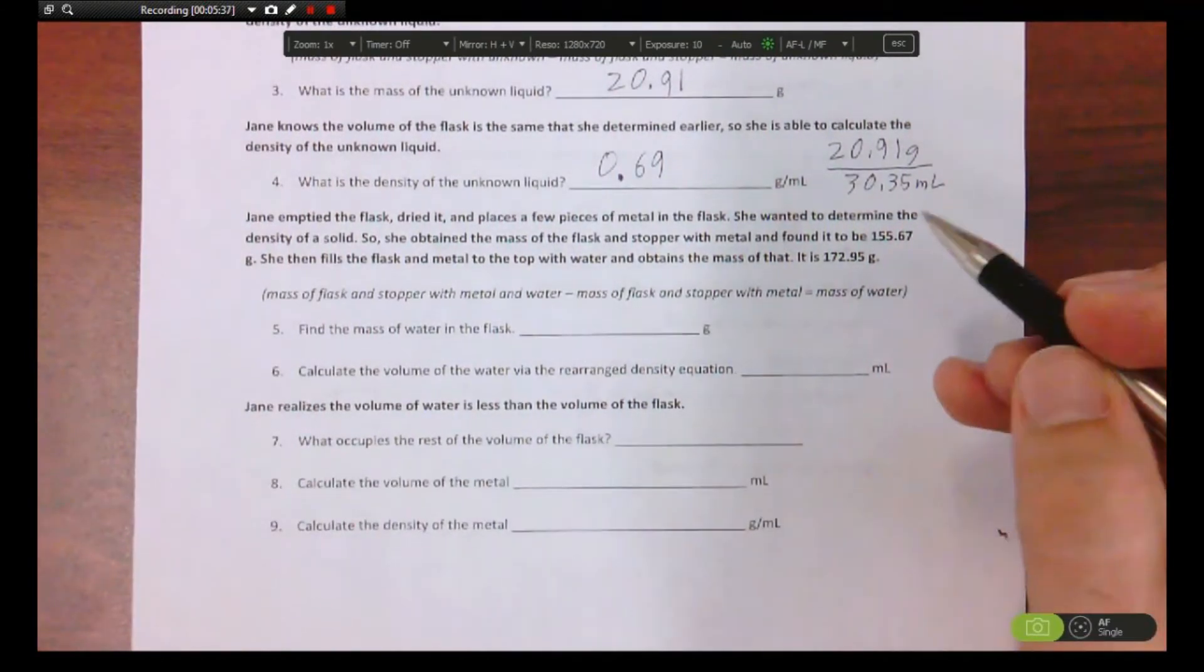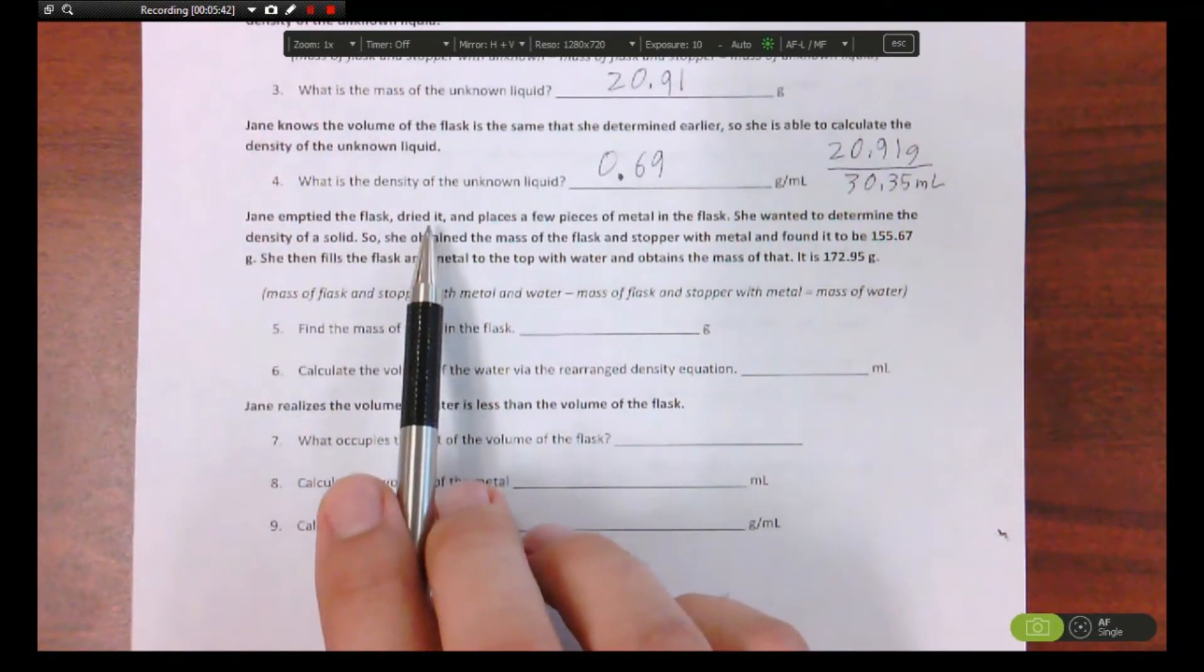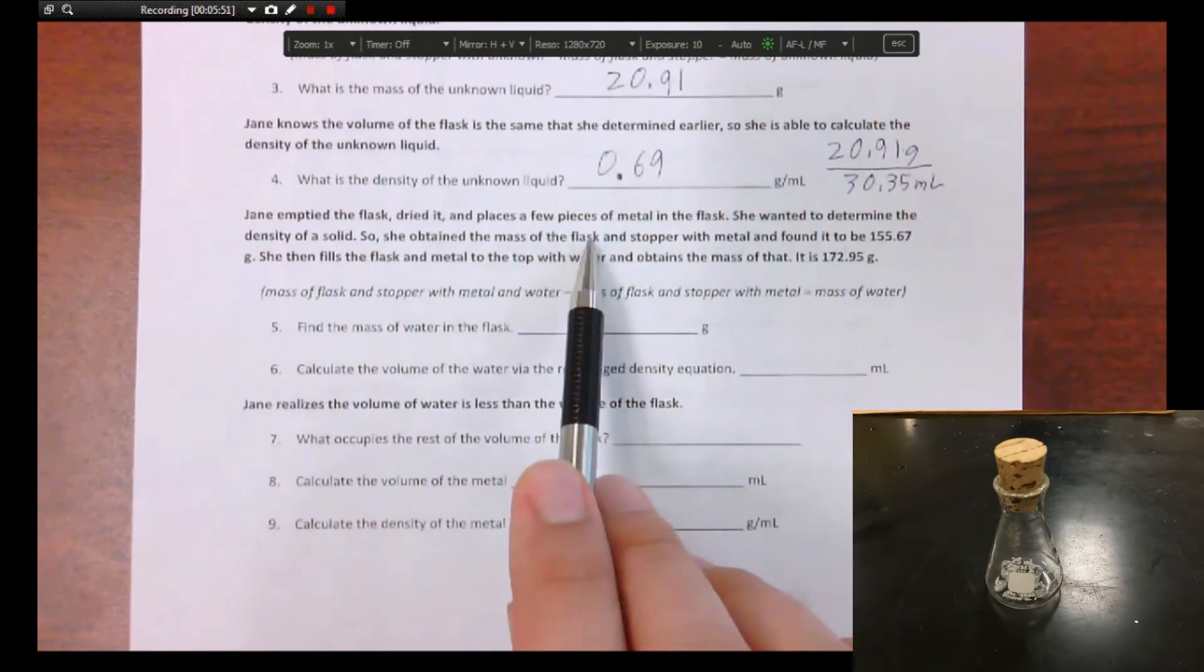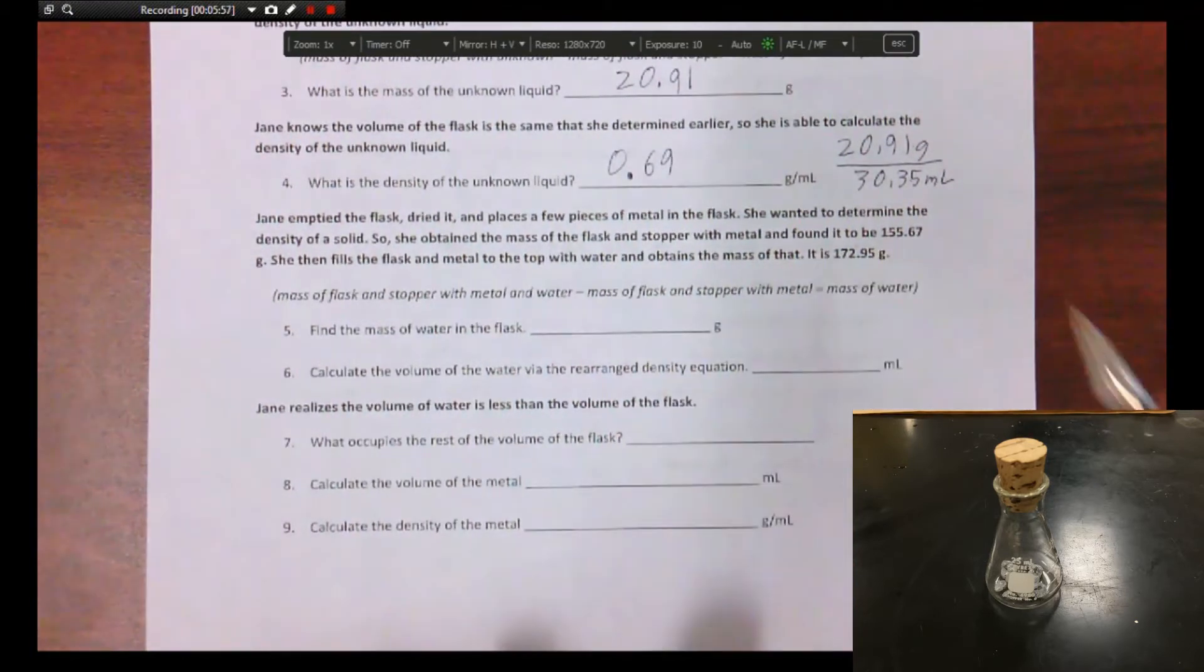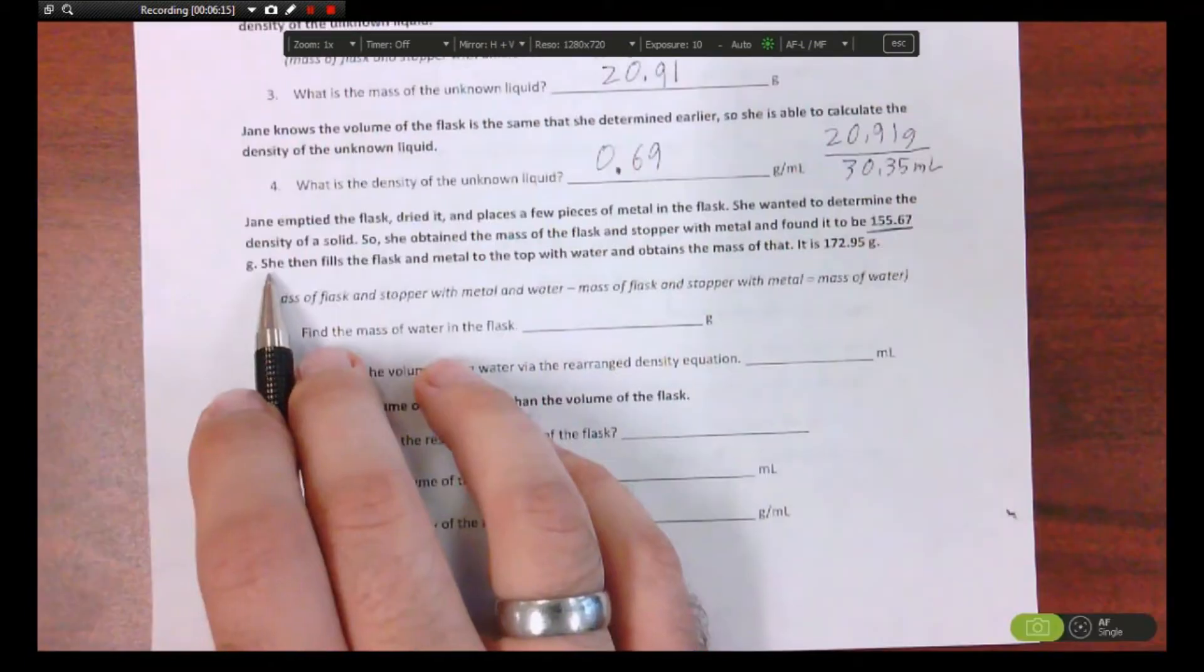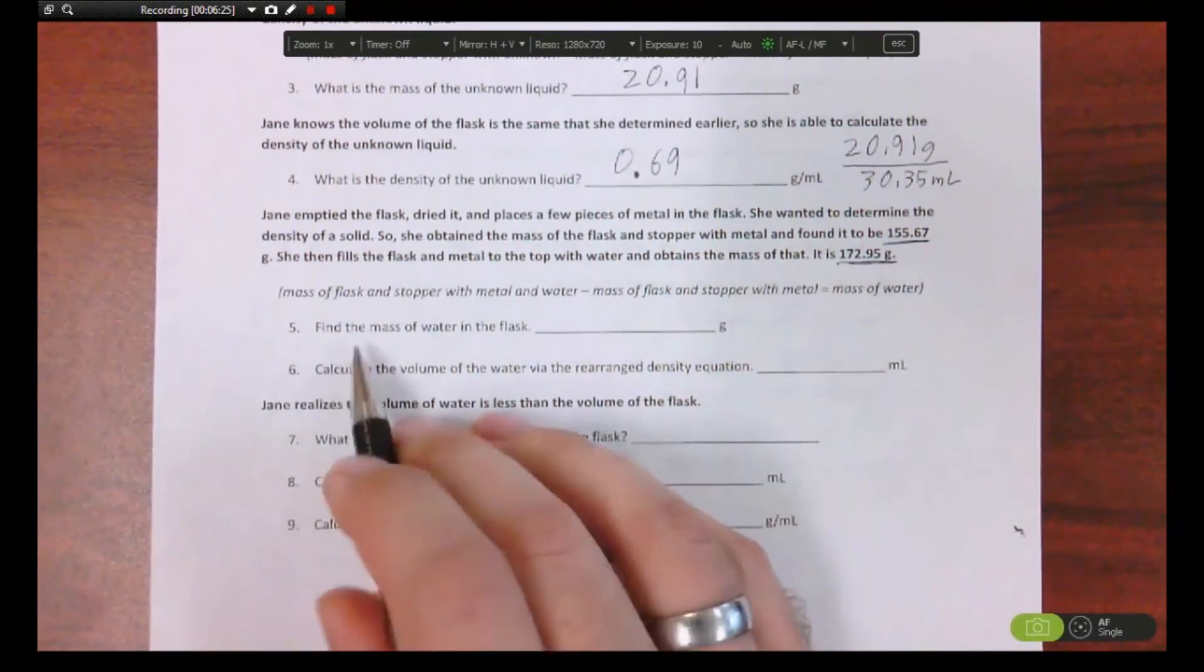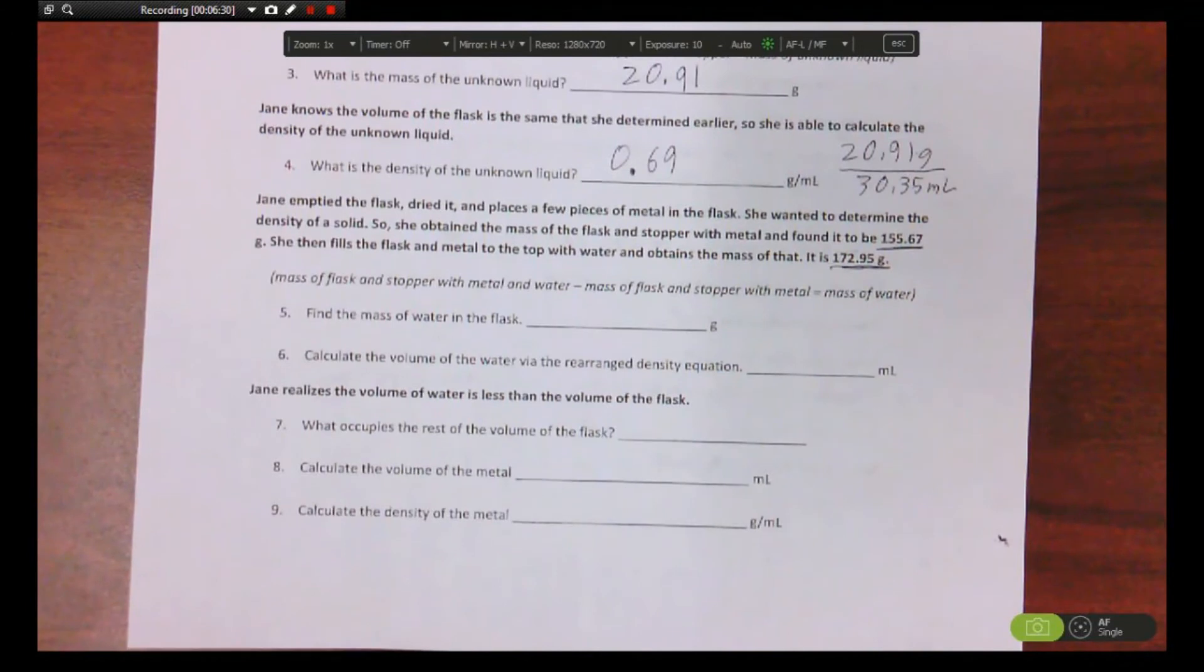Number five, find the mass of the water in the flask. So okay, this is what she did now. She emptied the flask, dried it again, using the same flask, placed a few pieces of metal in the flask. She wanted to determine the density of the solid, so she obtained the mass of the flask and stopper with the metal inside, found that to be 155.67 grams. She then fills the flask and the metal to the top with water and obtains the mass of that, it is this number. So they say find the mass of the water in the flask.